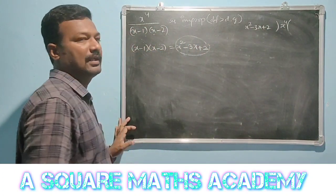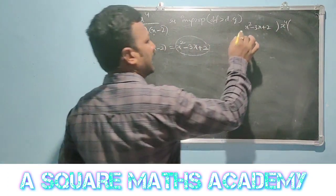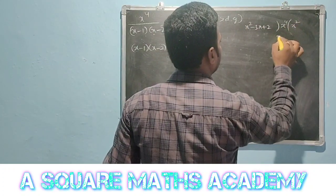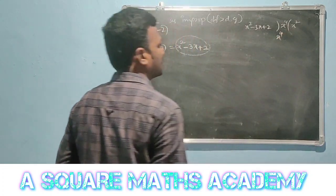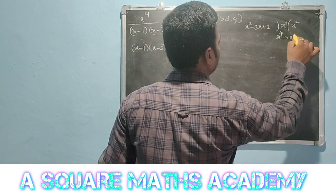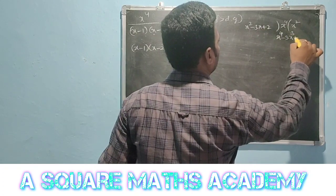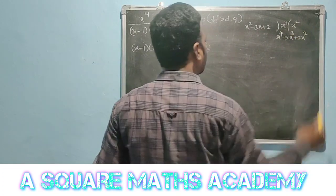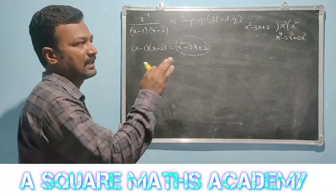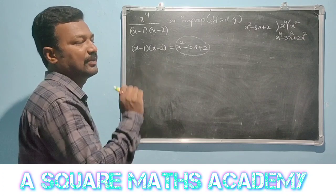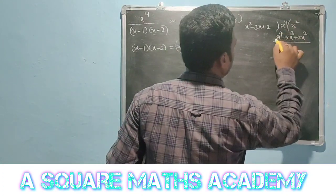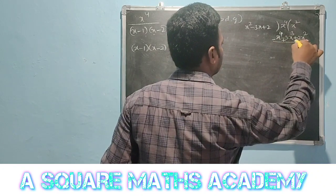We divide: x to the power 4 divided by x squared minus 3x plus 2. x squared into x squared gives x to the power 4. So the first term of the quotient is x squared. We have sign change: minus, plus, minus.